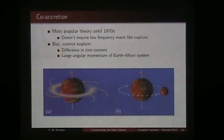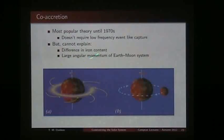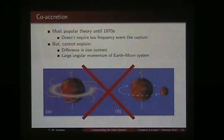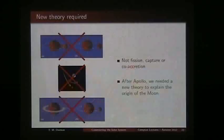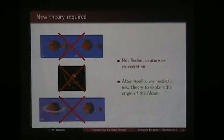The co-accretion mechanism was the most popular theory up until the 1970s. It doesn't require a low-probability event like capture. But it can't explain why the iron content differs between the Earth and the moon, and it can't explain the high angular momentum of the Earth-Moon system — if everything formed together as the Earth was spinning, why would we have such unusual angular momentum? After the Apollo missions, we came to the conclusion that none of these three mechanisms adequately explains the origin of the moon, and we needed a new theory.